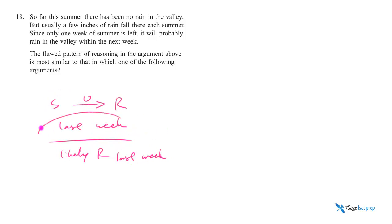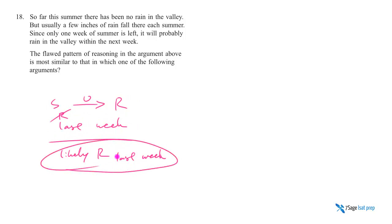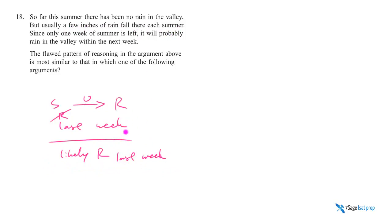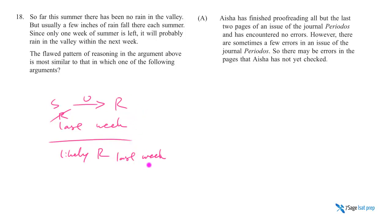So the argument is: the summer as a whole usually rains, so far it hasn't rained yet, we have one week left, therefore it's likely going to rain this last week. You can see that's a bad argument — when you say usually a few inches fall each summer, that sounds like an average. It doesn't mean it must rain every summer; that's not how weather works.